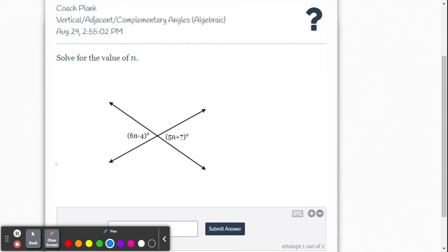So this time, we're given vertical angles, right? And we know that vertical angles are congruent, which means their measures are the same. So when we write the algebraic equation this time, it's going to be 6N minus 4 equals 5N plus 7. So it's all about the relationship between the angles and how we write the algebraic equation.